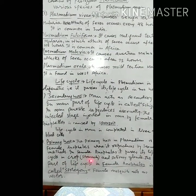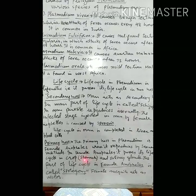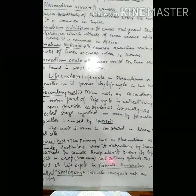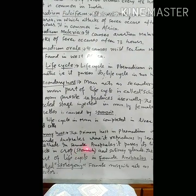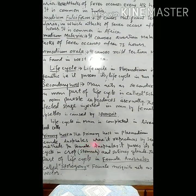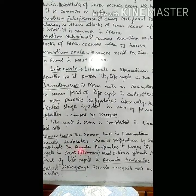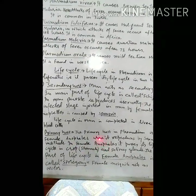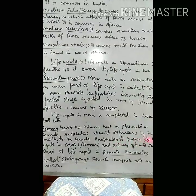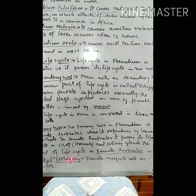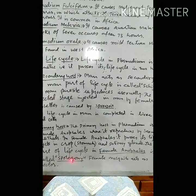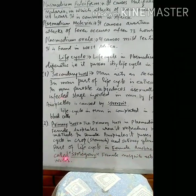In the female Anopheles mosquito, the parasite passes its life cycle in the crop (stomach or gizzard) and the salivary gland. The part of the life cycle in the female Anopheles is called sporogony, where it produces sporozoites. The female mosquito acts as the vector.